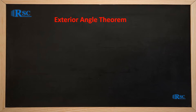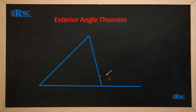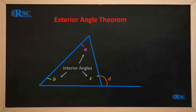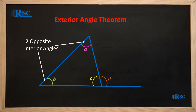In this triangle, D is an exterior angle and A, B, and C are interior angles. We refer to angles A and B as the interior opposite angles, since they are opposite to the exterior angle D.